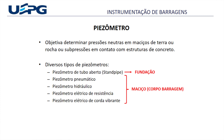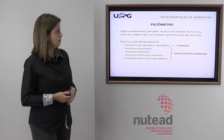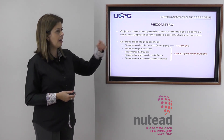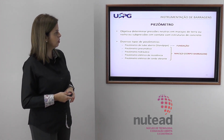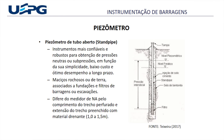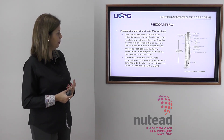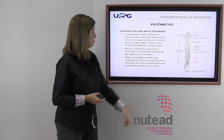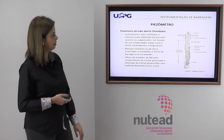O piezômetro standpipe é bastante utilizado em fundações, mas no maciço, em barragens de aterro, normalmente se partem para outros tipos. O piezômetro de tubo aberto é um instrumento confiável e robusto para obtenção de pressões neutras ou subpressões. Tem baixo custo e ótimo desempenho a longo prazo, utilizado em maciços rochosos ou de terra, associados a fundações e filtros de barragens ou escavações. Ele difere do medidor de nível d'água pelo comprimento do trecho perfurado e extensão do trecho preenchido com material drenante.